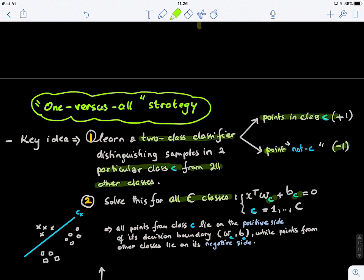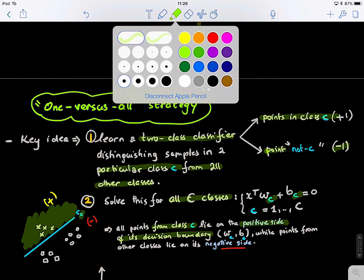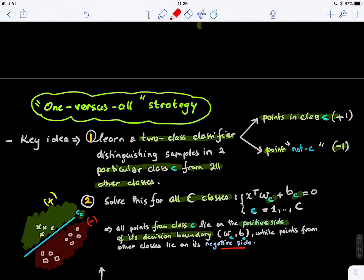So when solving this, this is a key idea. So all points from class C, they will lie on the positive side of its decision boundary. So if this is the classifier for the crosses, so the points lying on top of this, so the crosses will lie what we call on the positive side of this boundary, the blue boundary, so this is the positive side. And points lying on the, basically from the other classes, they lie on the negative side. So this is the negative side of the classifier. So these are one versus all.